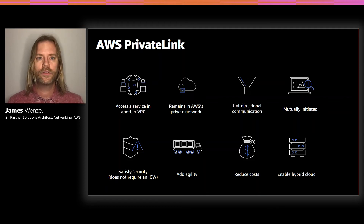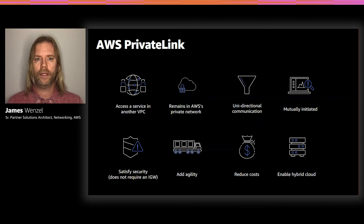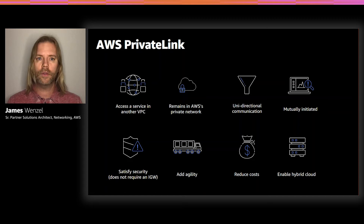It's still mutually authenticated, so if you're a provider offering the service, customers actually have to be authorized to turn it on. Customers also have to authorize that service to connect to their Elastic Network Interfaces. At no time do you need an internet gateway. This also enables hybrid cloud. Because we're using network load balancer as one of the key pieces of this design, the network load balancer can use IP addresses as its targets, and IP addresses — as long as they're routable through something like a VPN or Direct Connect — can actually be advertised to the cloud.